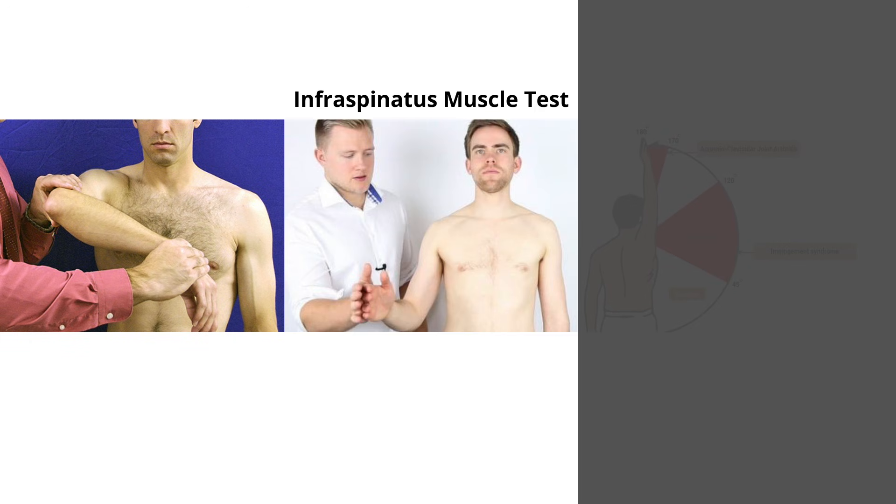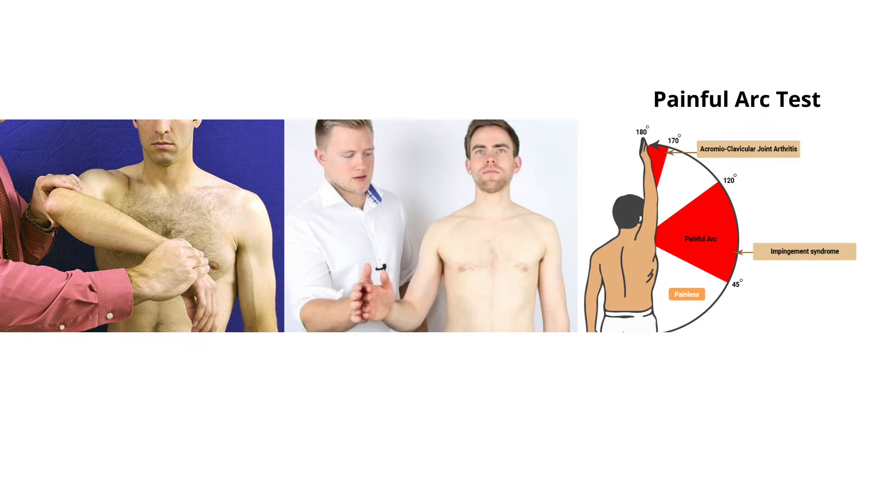The best tests for shoulder impingement — and the more tests that are positive, the greater the likelihood you have this condition — are the Hawkins-Kennedy test, the infraspinatus muscle test, and the painful arc. If this sounds like what you're presenting with, here's the video link in the upper right-hand corner you can click on, which will bring you to the video covering shoulder impingement so you can start addressing your problem.